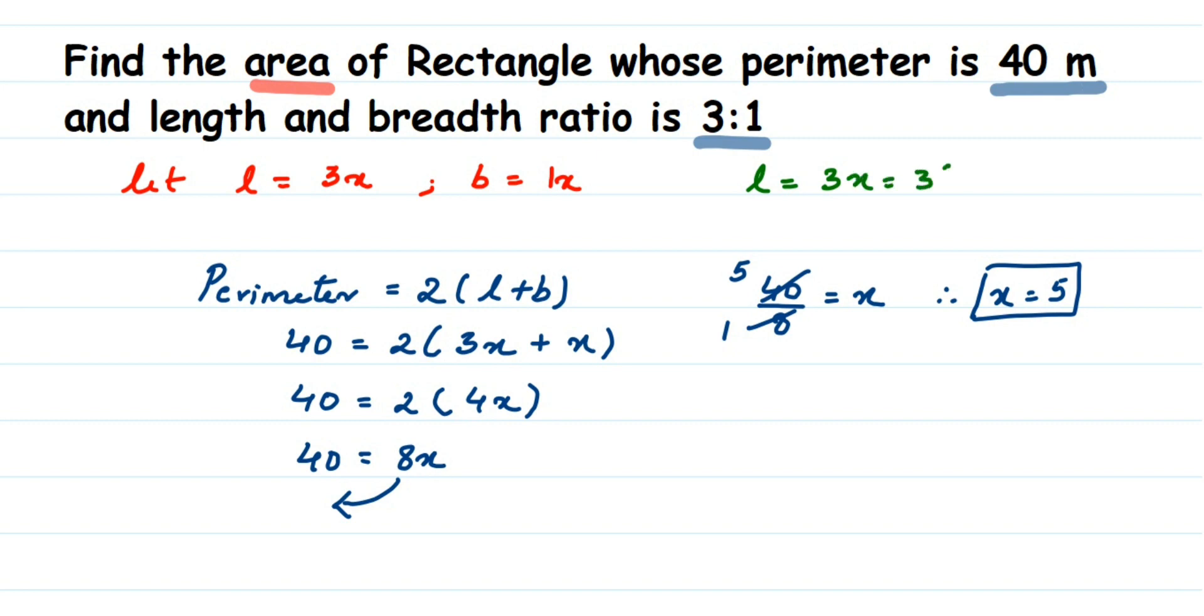Similarly, breadth B = 1x = 1 × 5 = 5 meters. So we got length and breadth.